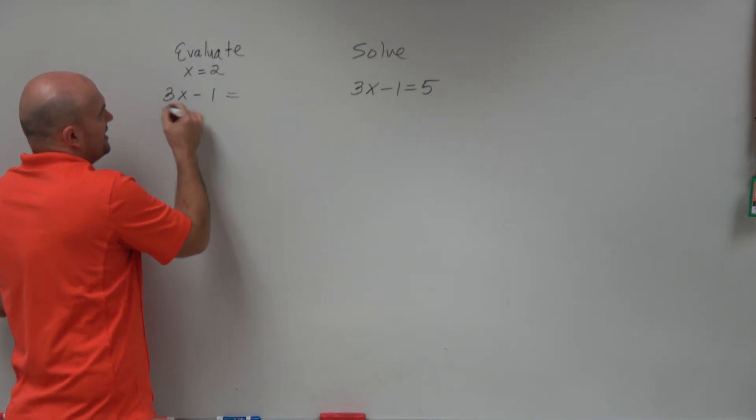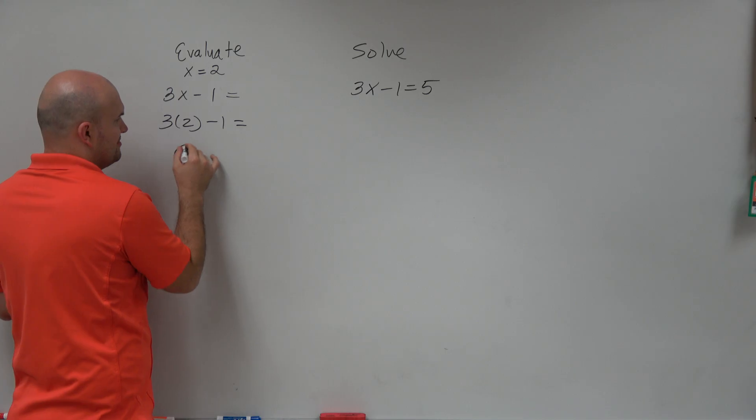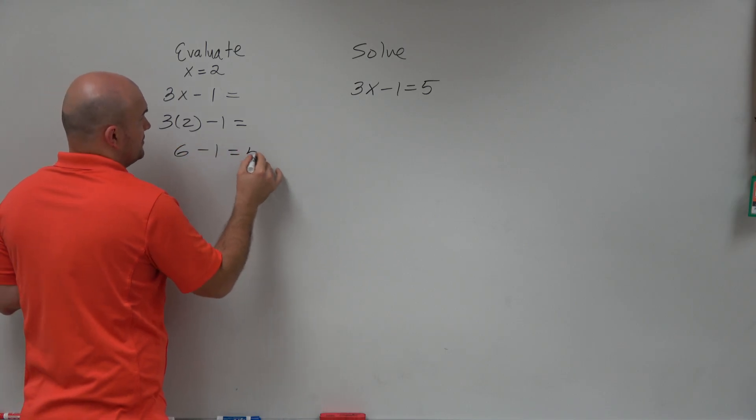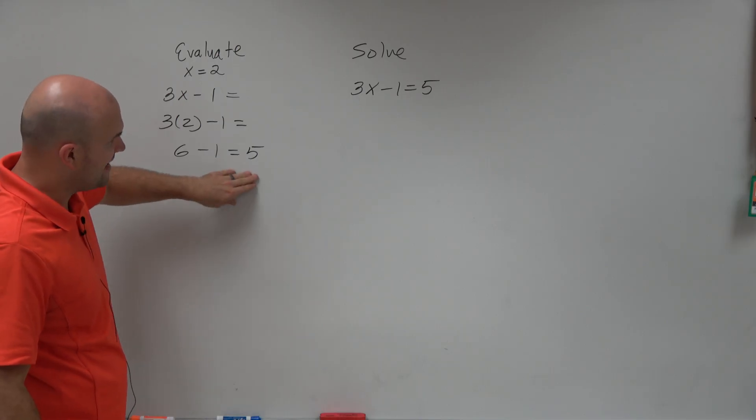So if I plug x into 2, it can say 3 times 2 minus 1. I'm still looking for what that's equal to. 3 times 2 is going to be 6 minus 1 is now equal to 5. So we could say that the value of the expression is going to be equal to 5.